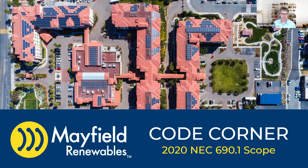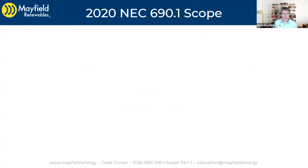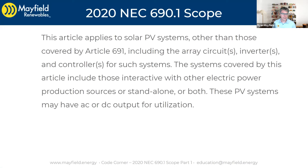Let's jump in and talk about the scope of 690.1. We'll be looking at this in the eyes of the 2020 code, so our code references are all going to be 2020. The scope is here on the screen — this is the code language. Really, this is just setting the stage for what 690 is. It's all about our PV systems, interactive with or without utility, so standalone systems are covered here as well. They can have AC or DC utilization, so it's trying to be as broad as possible covering all of PV.